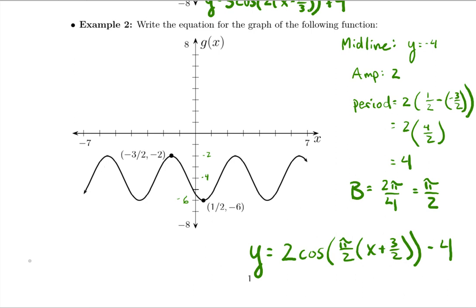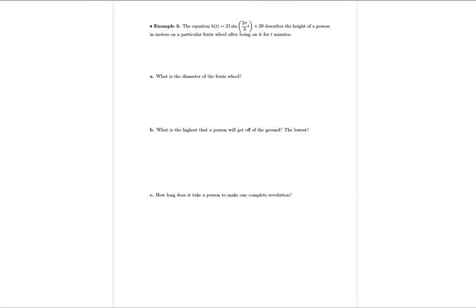And just so you know, let me just write another possibility. So there are more than one right answer to these. You could have also said negative two times the cosine of pi over two times x minus a half, so we're thinking of a shift to the right a half minus four. But since that's at its minimum there, that's why I have the negative in front.